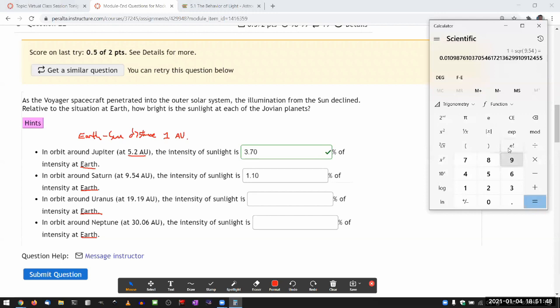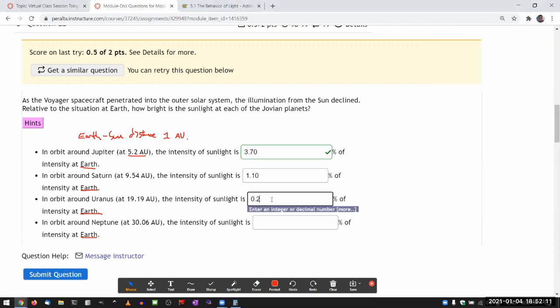1 divided by 19.19 squared. I'm using the keyboard to type in that square. That is one of the ways to do it. You should always know how to use your own calculator. So moving two decimal places, that should be 0.272.